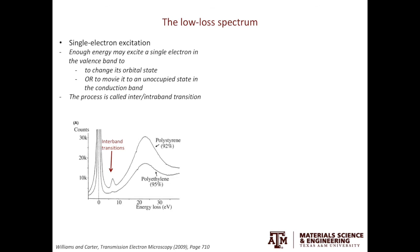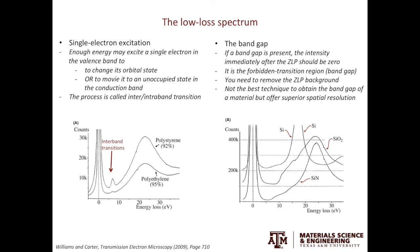We can also look at the onset of the plasmon peaks to tell us the band gap of the material. If the material has a band gap, the peak intensity immediately after the zero loss peak should be zero or just background noise. In the case of silicon, because the band gap is so small, it is buried in the zero loss peak. In silicon dioxide, there is no signal initially, but it starts picking up signal from around 10 eV — so the band gap of silica is around 10 eV. Similarly, in silicon nitride, the band gap starts from around 6 or 7 eV.